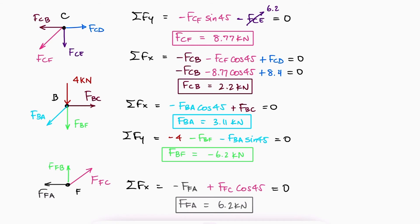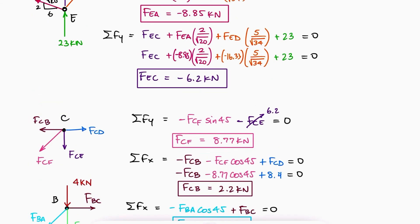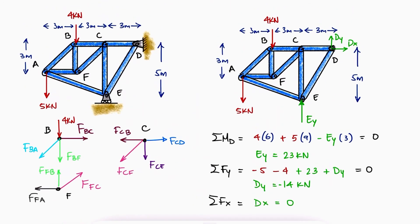and because we assumed tensile forces for all vectors, like suggested in the main video, positive values will be tensile and negative values will be compressive. Looking at the values we obtained, we can highlight the members that are under compression, which are the ones with a negative value, and we can highlight those that are under tension, which are the ones with a positive value.